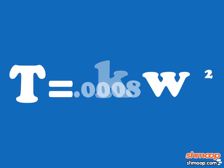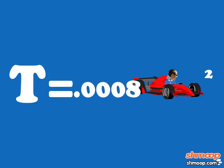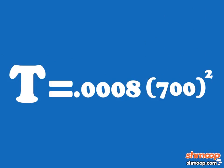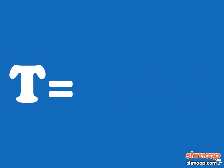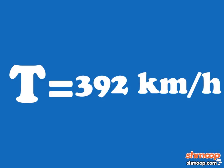Now that we've got our K, we can just plug in the value of Dario's 700-kilogram car. T equals 0.0008 times 700 squared, or T equals 392 kilometers per hour.